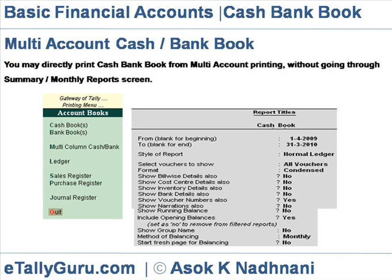Multi-Account Cash Book: At the Multi-Account Account Books menu, select Cash Book to get the list of all Cash Accounts. Select All Items to print the Cash Book for all Cash Accounts, or select a specific Cash Account.